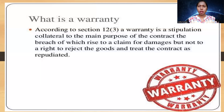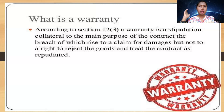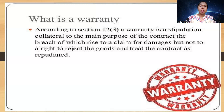Example of a condition: X wants to purchase a horse from Y which can run at 50 kilometers per hour. Y points out a particular horse and says it will suit X's requirement. X buys the horse, but later finds the horse can run at only 30 kilometers per hour. In this situation, the breach of condition occurs — the stipulation forms the very basis of the contract. What can X do? He can return the horse and claim money, or Y can give another horse. This shows that if a condition given by the seller is not fulfilled, as a buyer we have the full right to either get our money back or return the product.